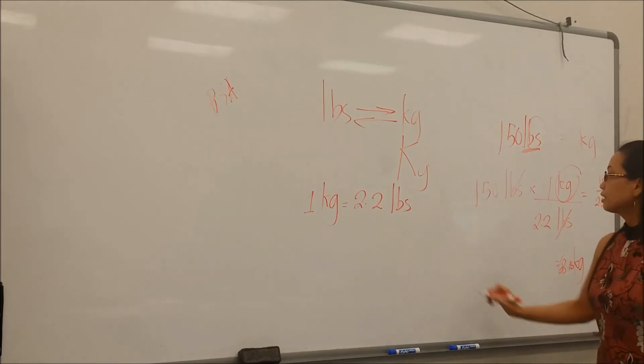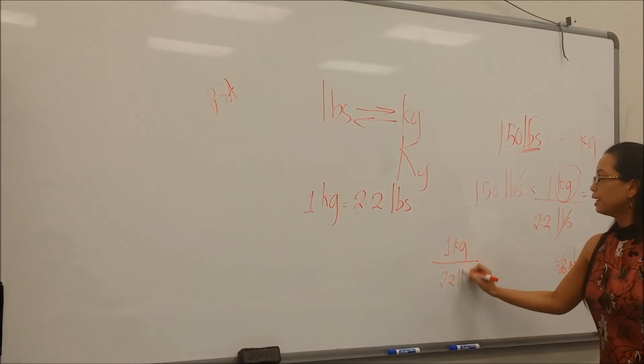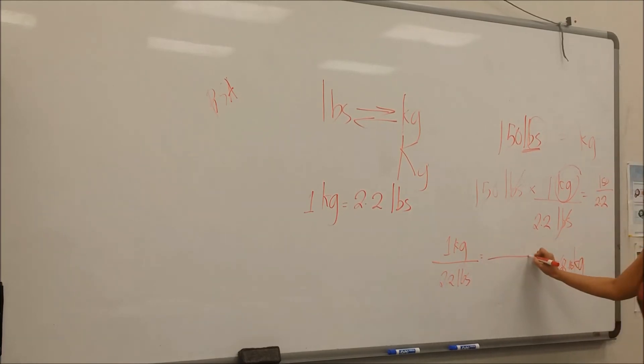That's ratio and proportion. One kilogram is to 2.2 pounds as—what are we looking for? Kilograms, right. X kilogram is to 150 pounds. What do you do next? Cross multiply. This is your 150 divided by 2.2. You should come up with the same exact answer.